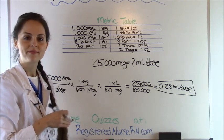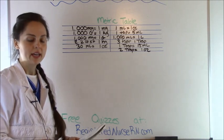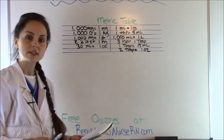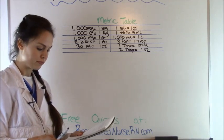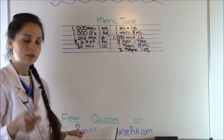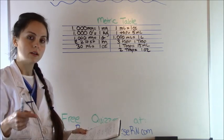That is how you solve that problem. Let's move to problem three: MD orders ibuprofen six milligrams per kilogram by mouth every four hours as needed for pain for a child. The child weighs 64 pounds. The pharmacy dispenses you with 50 milligrams per two mLs. How many mLs will you administer per dose? By looking at this problem, we're given that the doctor orders six milligrams per kilogram.